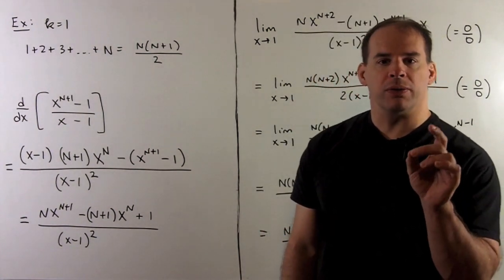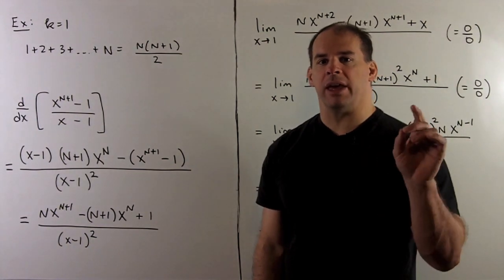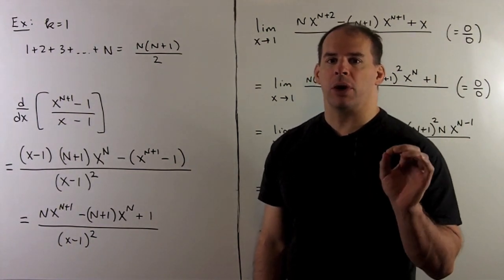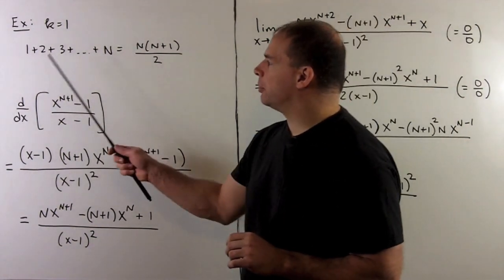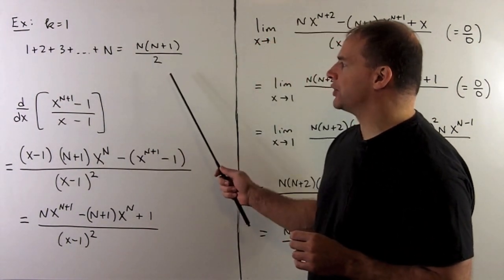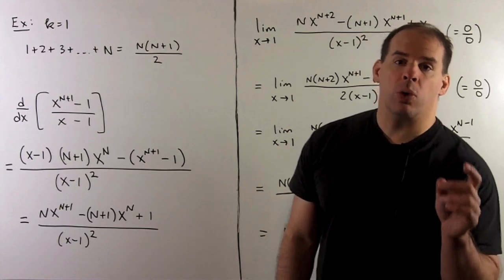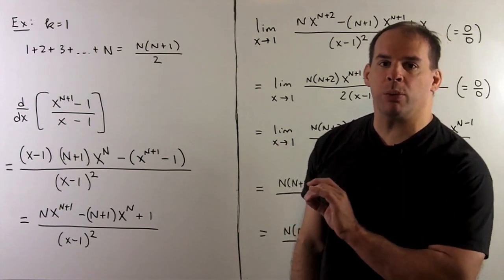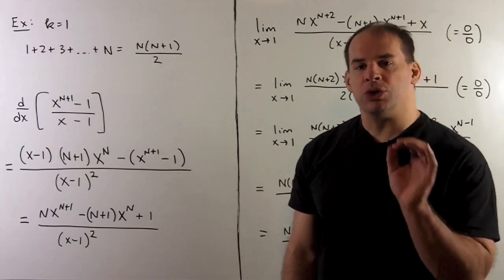Now in general, using the recipe is going to require heavy bookkeeping, so for here we're only going to verify the case with k equal to 1. I'm going to use the recipe to show that 1 + 2 + 3 up through n equals n(n+1)/2.